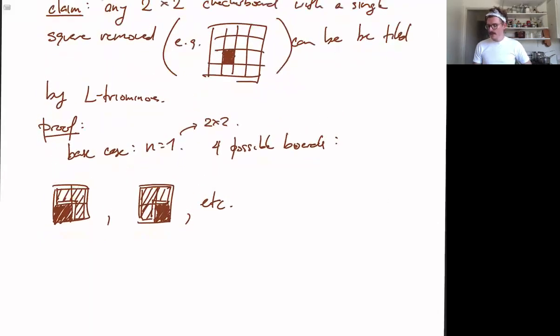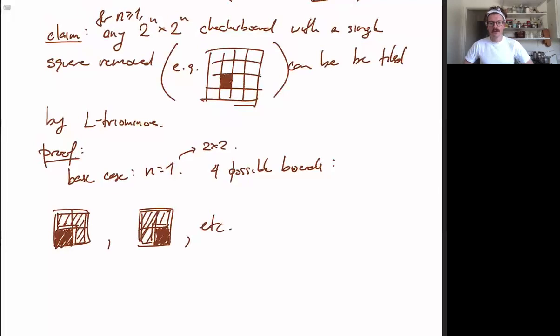So that's the base case. n equals 1, we've shown that any 2 by 2 checkerboard with a single square removed can be tiled by L triominoes.